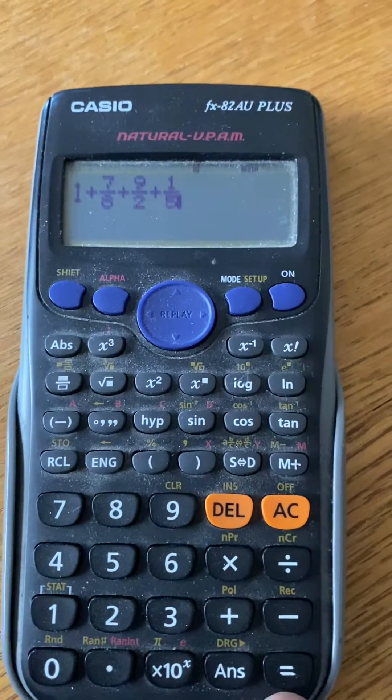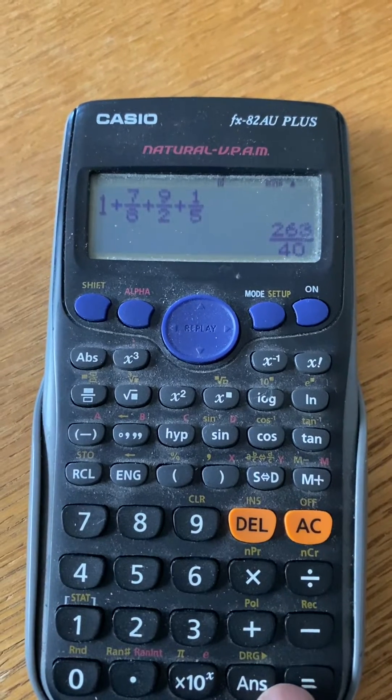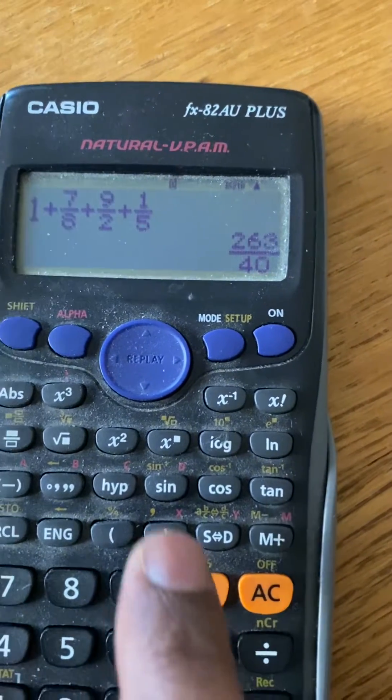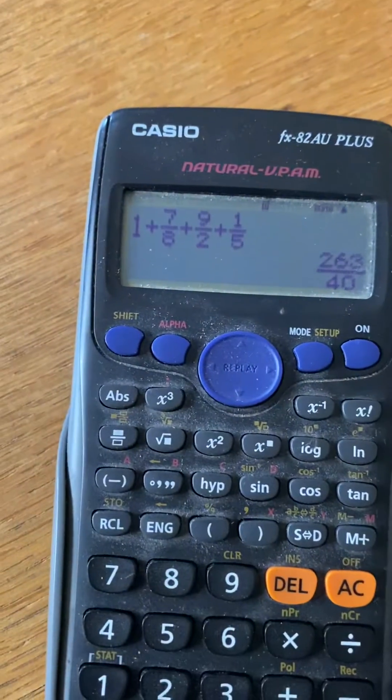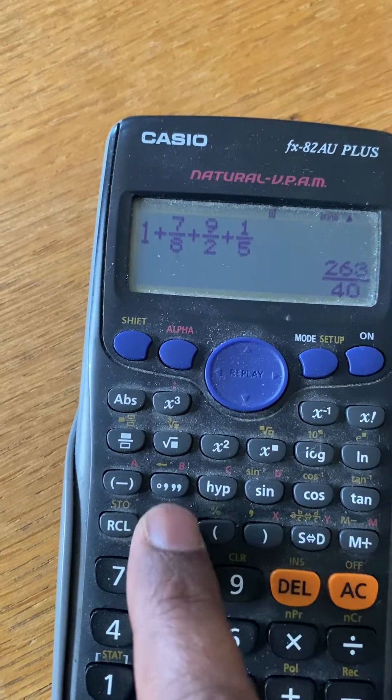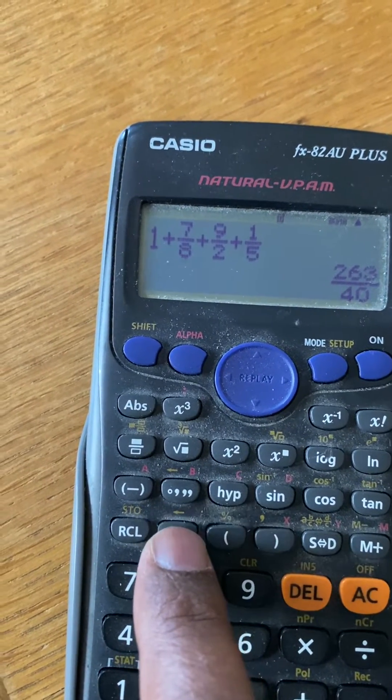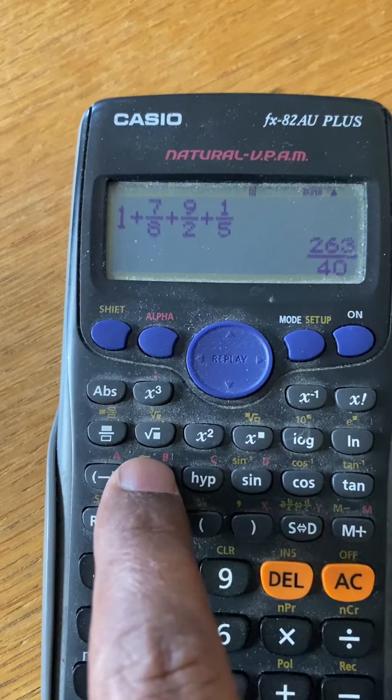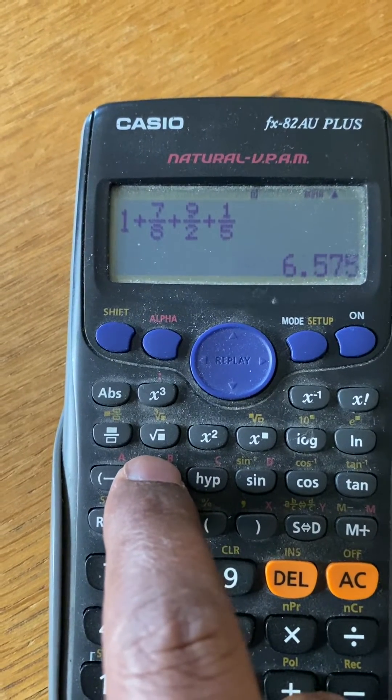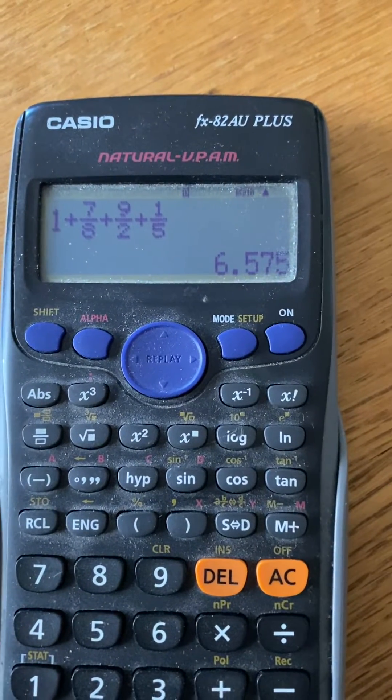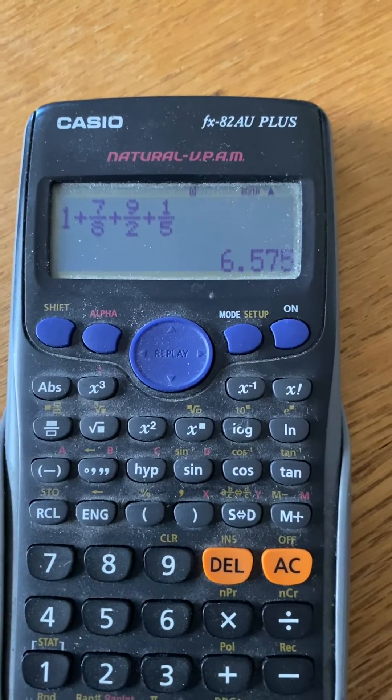I press the equals sign to get the answer, and I get 263/40. I can either choose this answer 263/40, or I can simply press this button here which will get me the answer 6.575.